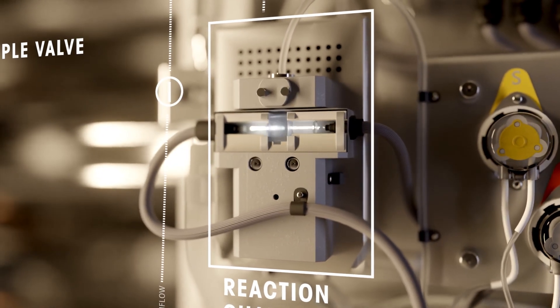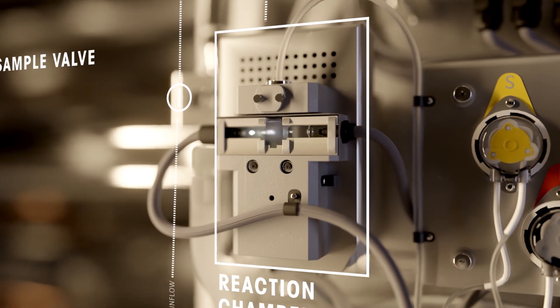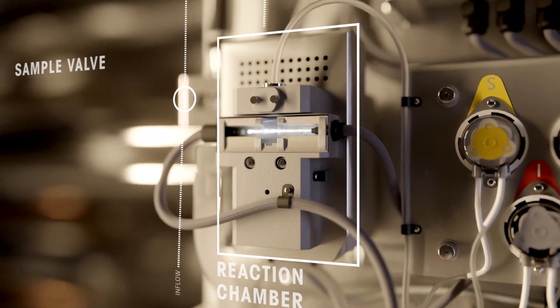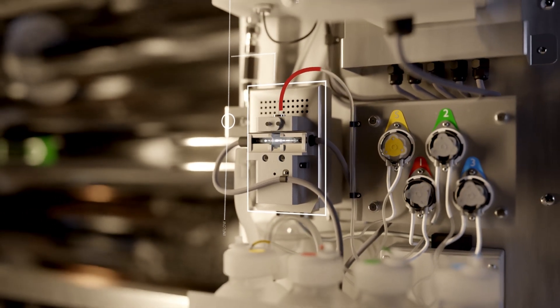A zero-calibration measurement is performed to compensate for sample clarity and optical changes. Next, a reagent comprising ammonium molybdate and sulfuric acid is mixed with the sample.